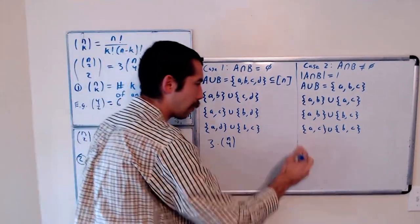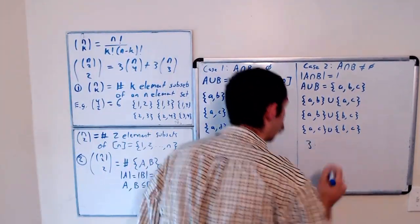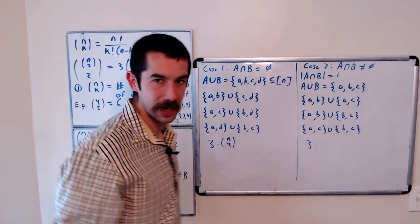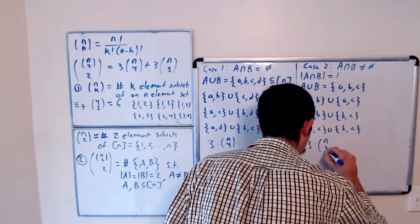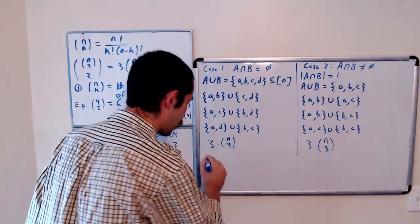And so there's three ways for each three element subset of 1 through n. That's n choose 3.